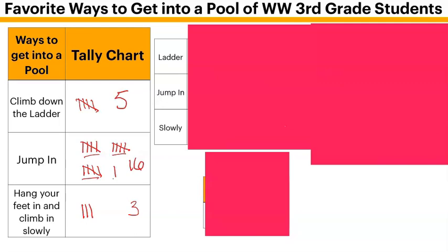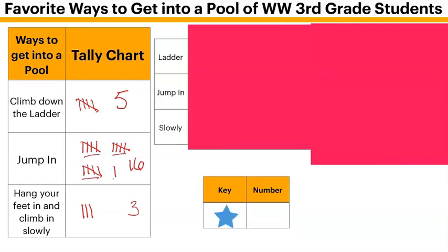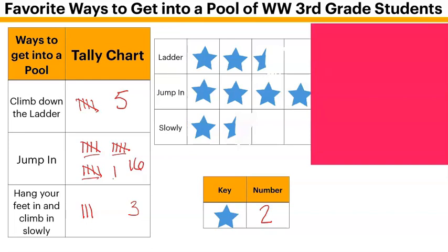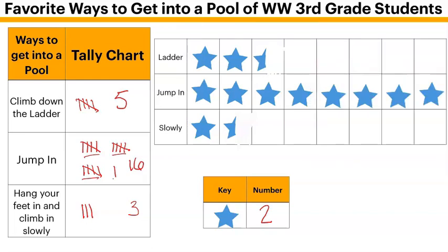Now I have my tally counts, so I need to make a key for our pictograph. I put it as one star. We don't want to make sixteen stars across, so each star equals two votes. For the ladder — that's an odd number, so I need a half star: two and a half stars. For Jumping Right In, going across: one, two, three, four, five, six, seven, eight stars, which is sixteen. That checks out.